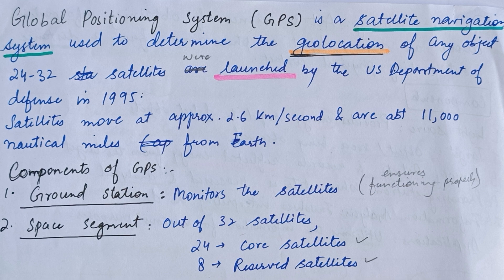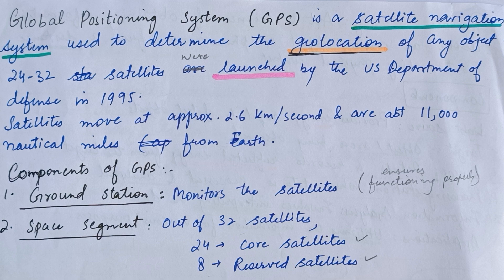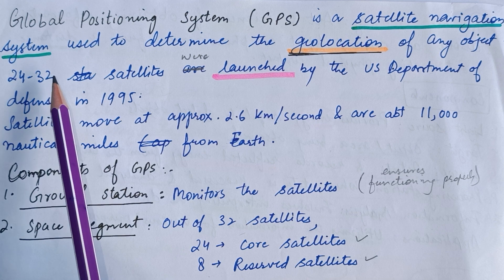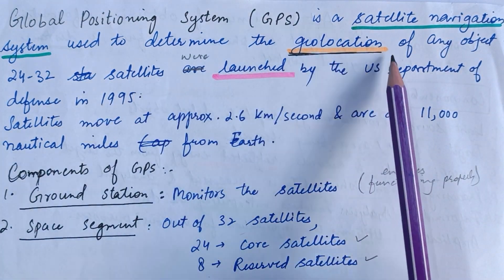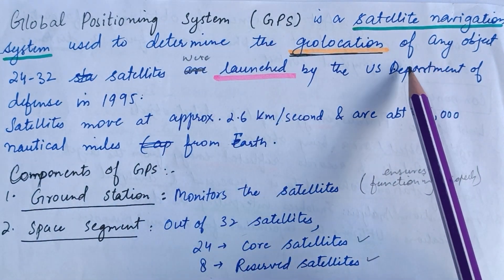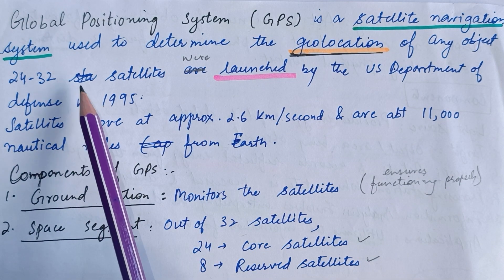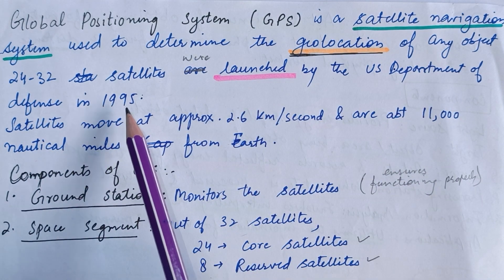Today we will start with Global Positioning System. If you are new here, make sure to hit that subscribe button and press the bell icon so you will never miss an update. GPS, or Global Positioning System, is a satellite navigation system used to determine the geolocation of any object. 24 to 32 satellites were launched by the US Department of Defense in 1995.